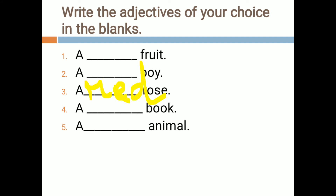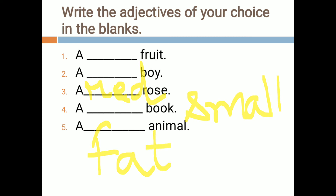Next, 'a dash book.' We can write anything about the book — a small book, a big book, a large book. So we will write 'a large book.' Lastly, 'a dash animal.' We can describe the size, color, or shape of an animal — a fat animal, a big animal, a gray animal. So we are writing 'a fat animal.' In this way we have written adjectives of our choice.